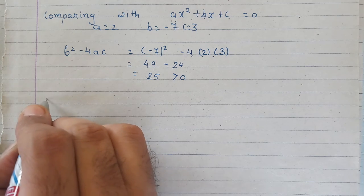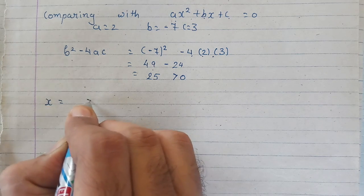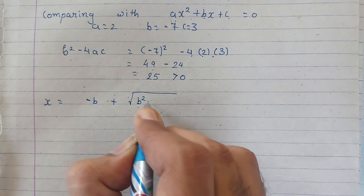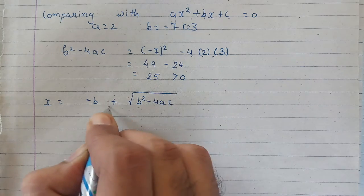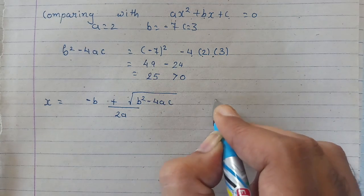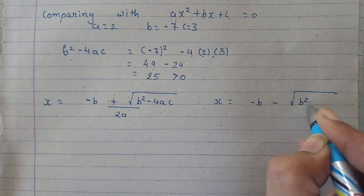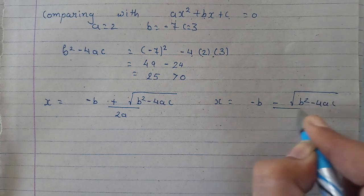So let's find them. The first root, according to the formula, minus b plus under root b square minus 4ac upon 2a. And the second root, minus b minus under root b square minus 4ac upon 2a.